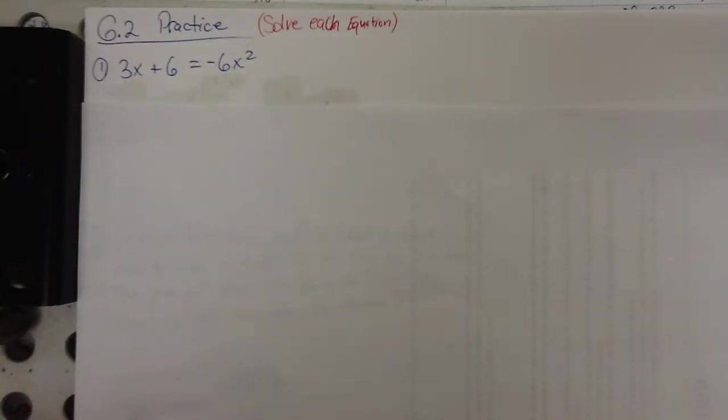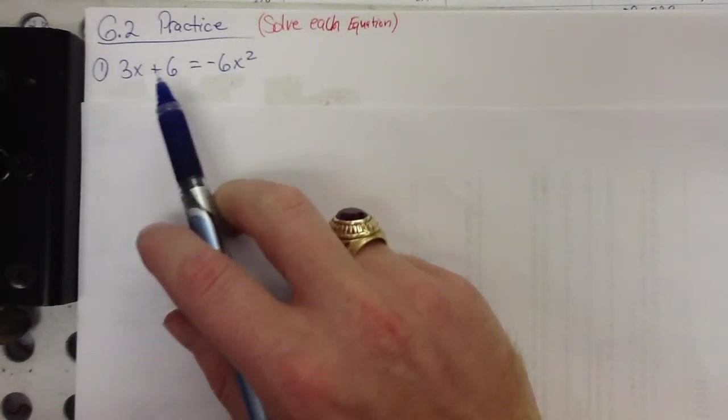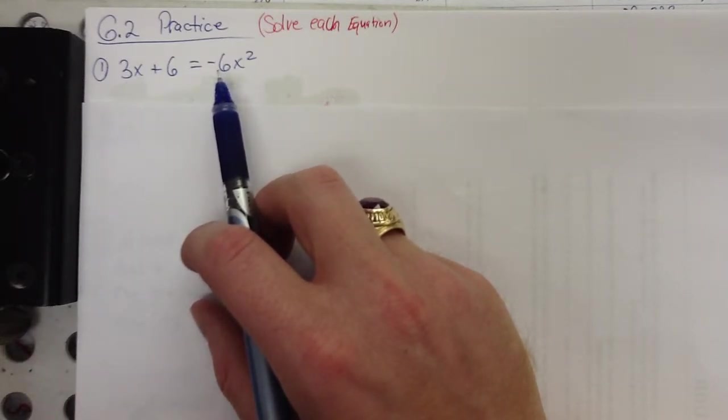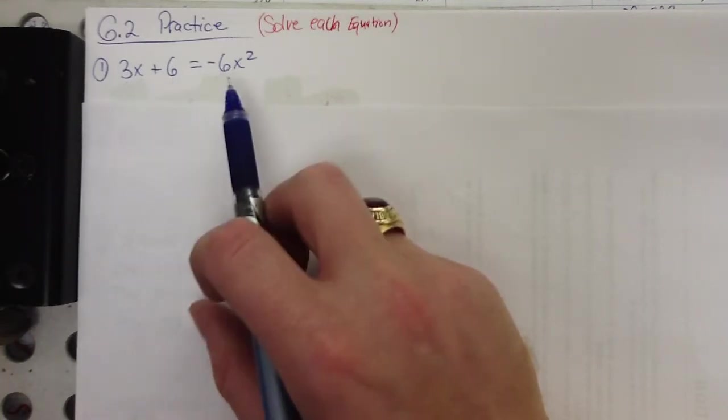Alright, practice for section 6.2. We've got an equation that we're supposed to solve. Remember we're doing this by graphing. Now to get this in the calculator, what we want to do is get it equal to zero. In fact, everything in this chapter and well, everything for the rest of the year, if you're going to solve it, let's get it equal to zero.